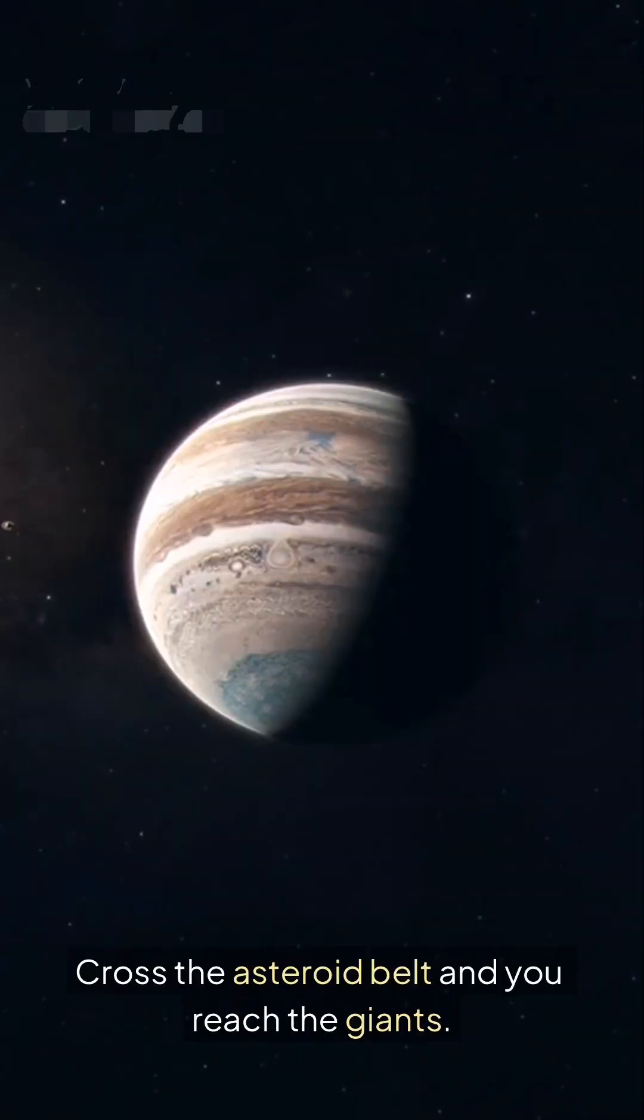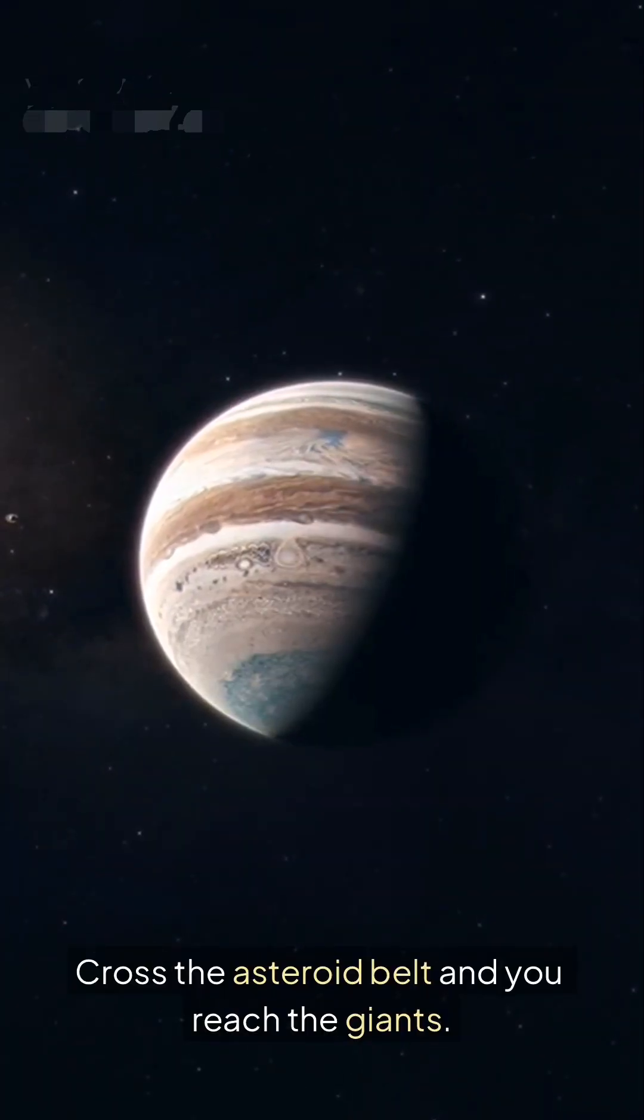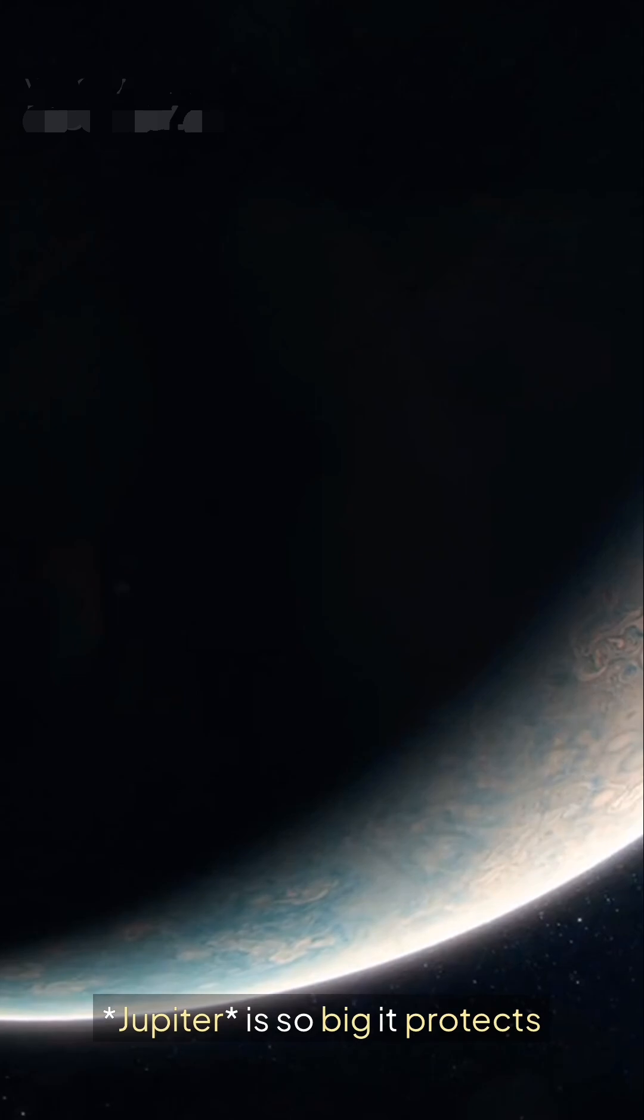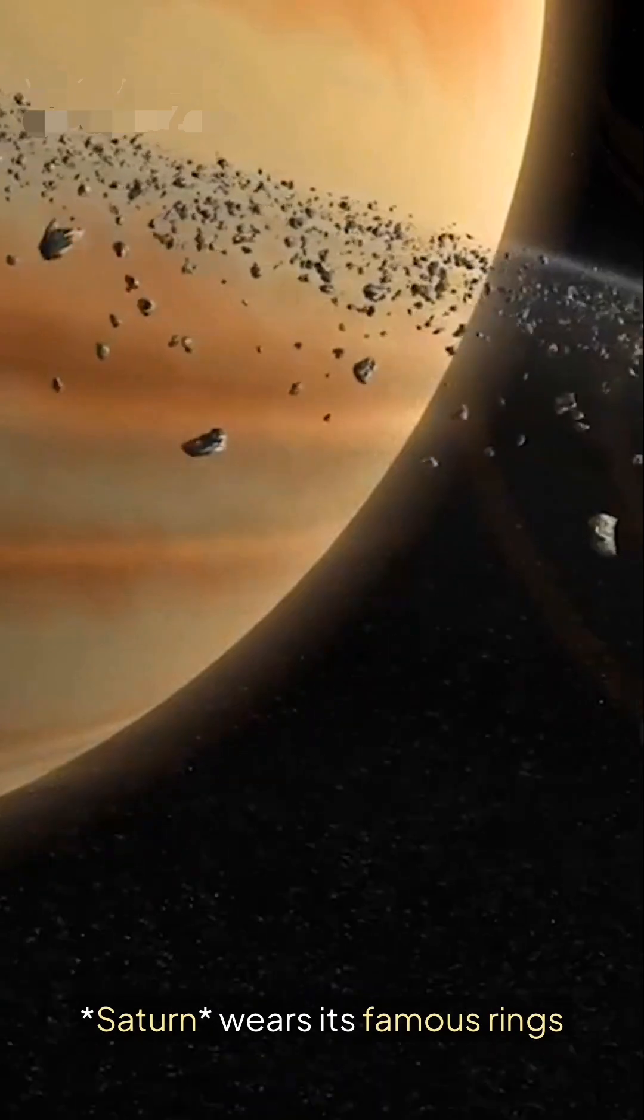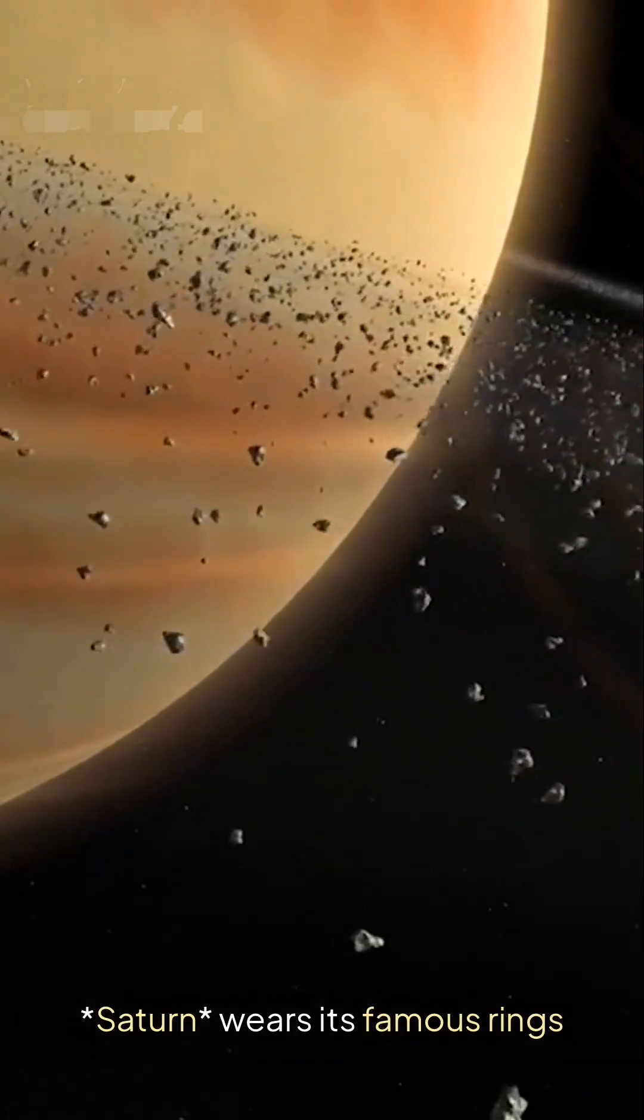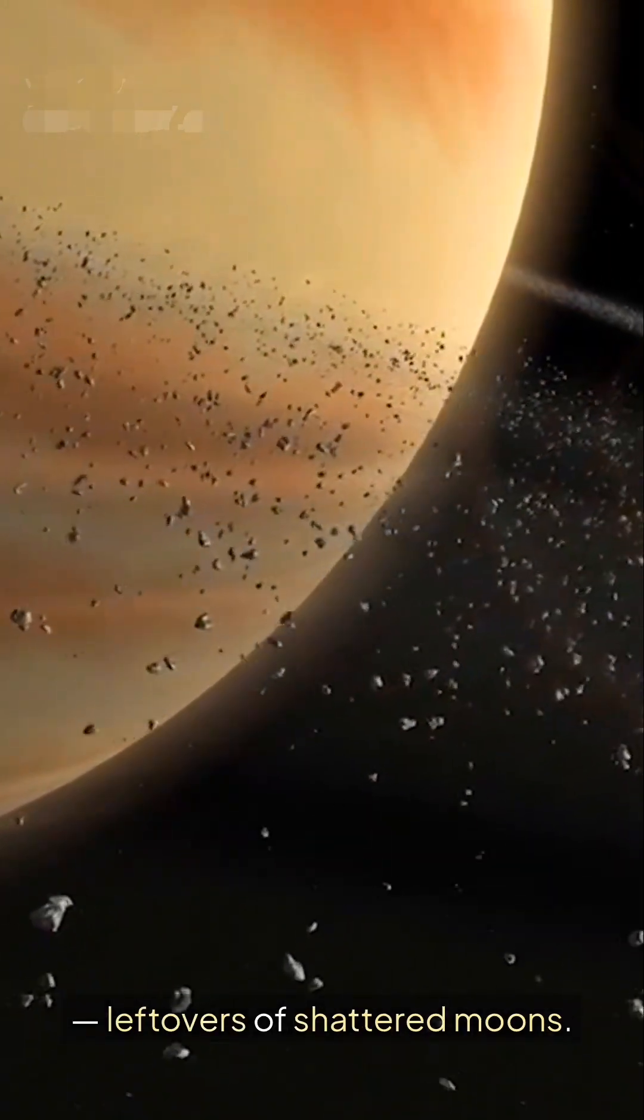Cross the asteroid belt and you reach the giants. Jupiter is so big it protects Earth by pulling in dangerous asteroids, while Saturn wears its famous rings—leftovers of shattered moons.